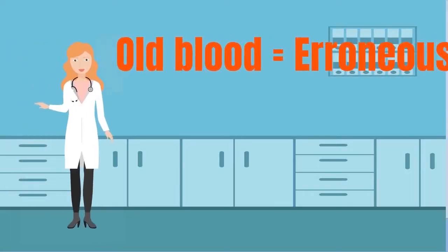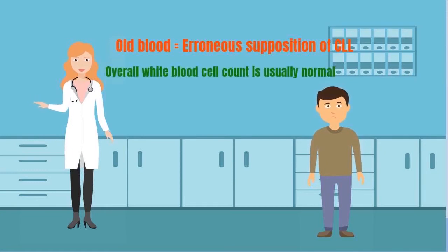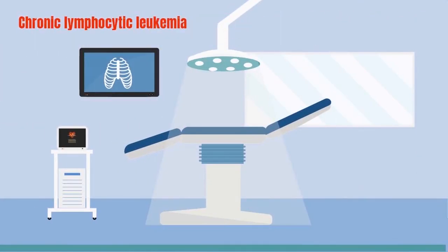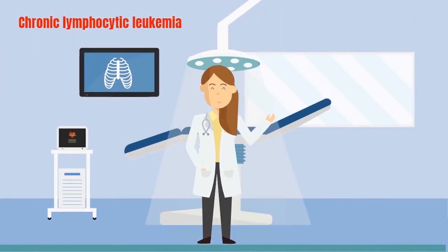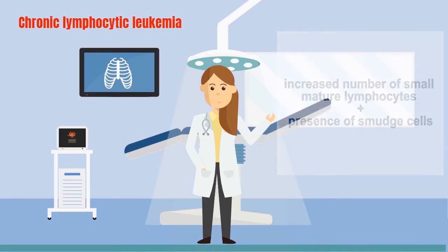In the context of all blood reporting, the presence of smudge cells will have no clinical significance to the physicians. It could even lead to an erroneous supposition of chronic lymphocytic leukemia. In such instances, the overall white blood cell count is usually normal. Chronic lymphocytic leukemia typically presents with an increased number of small mature lymphocytes along with the presence of smudge cells. So friends, that's all about smudge cells.